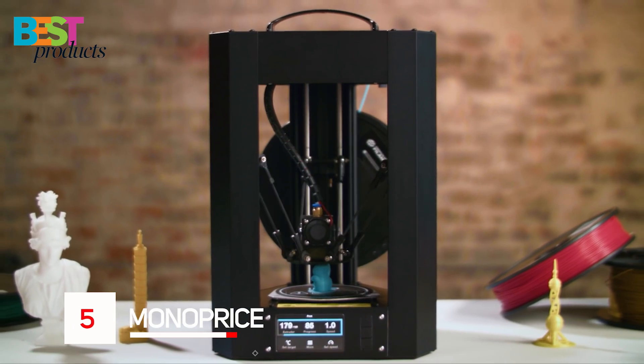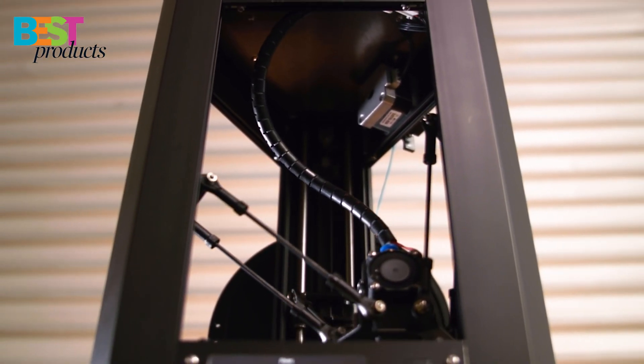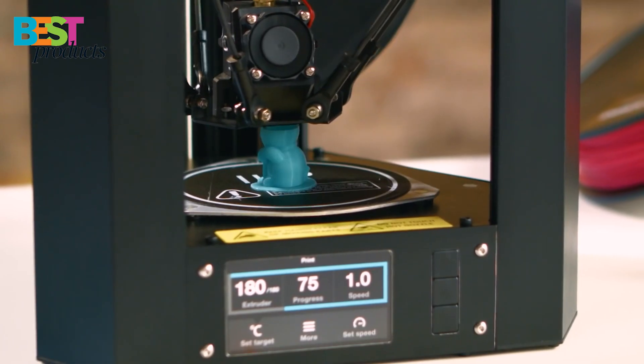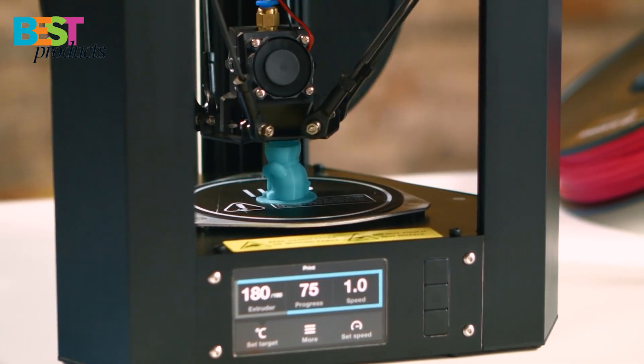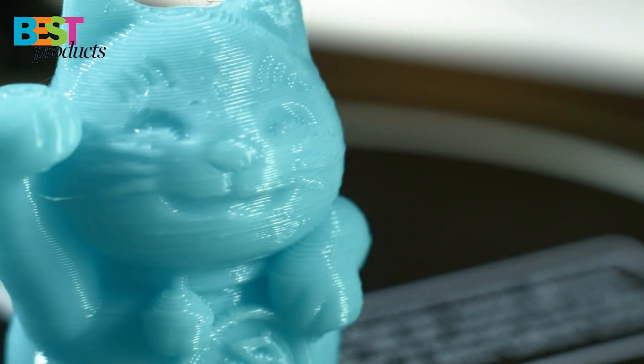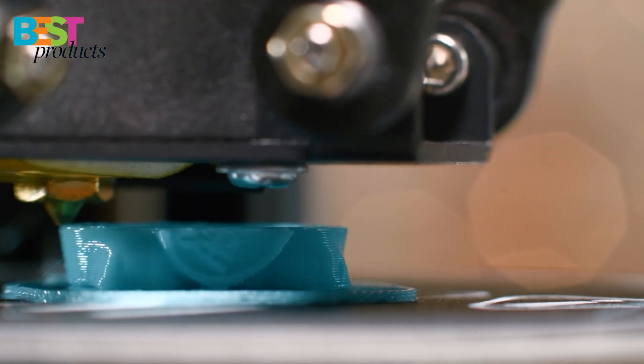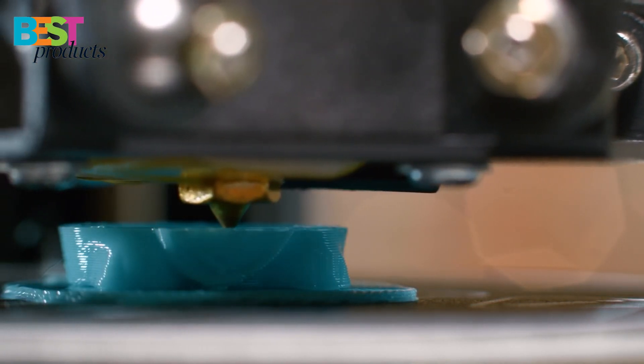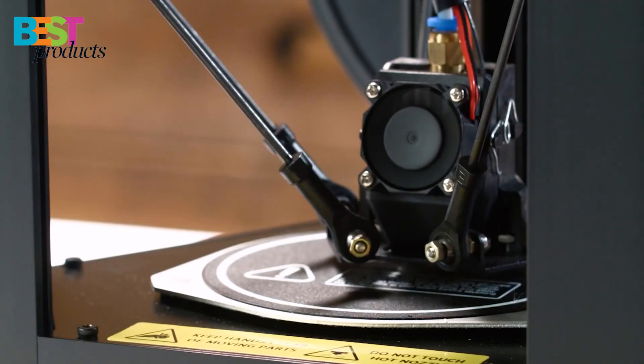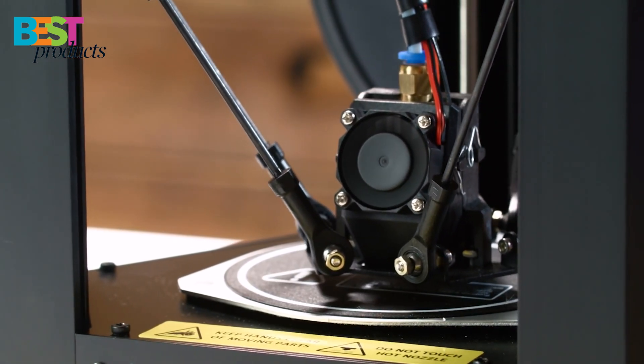Number 5: Monoprice. The Monoprice Mini Delta V2 3D printer is a great machine for those looking for an upgrade to the ever-popular Mini Delta. With updated features like touchscreen control, updated firmware and UI, and quieter drivers, this machine is perfect for both beginners and experienced users. The printer is also compatible with Cura and many other open-source 3D printing slicing software packages, making it a great option for those who want to tinker or just want a machine that works with their preferred software.